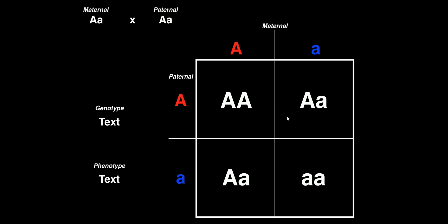Now we can figure out the ratio of the genotypes. We look for unique genotypes. For example, big A, little a — this heterozygote has exactly one like it, down in the third cell. So there are two heterozygotes. But big A, big A — this homozygous dominant offspring — is the only one like it in this Punnett square.